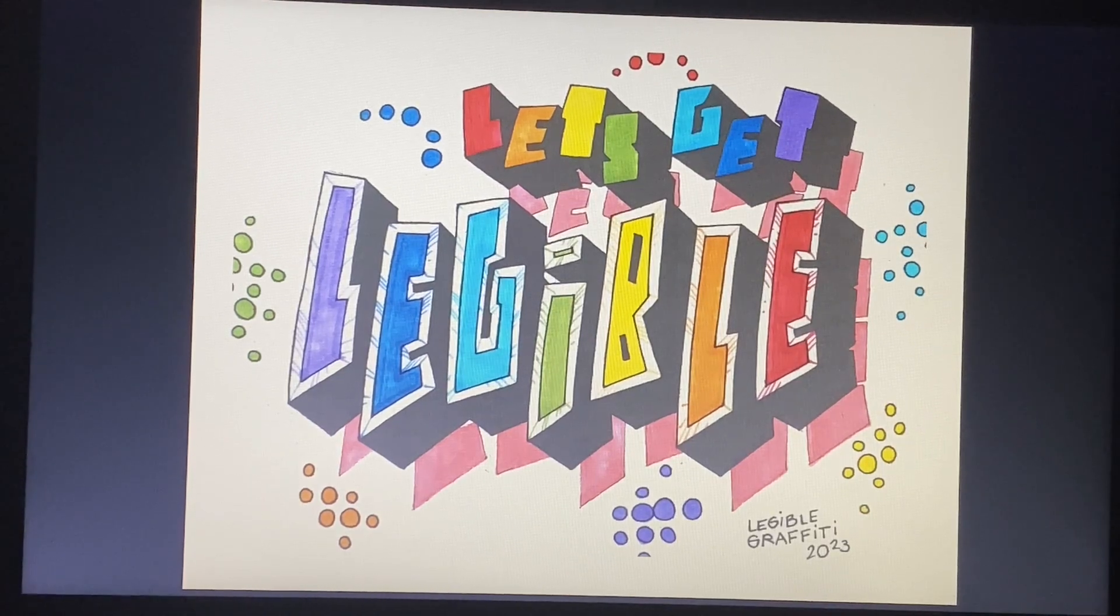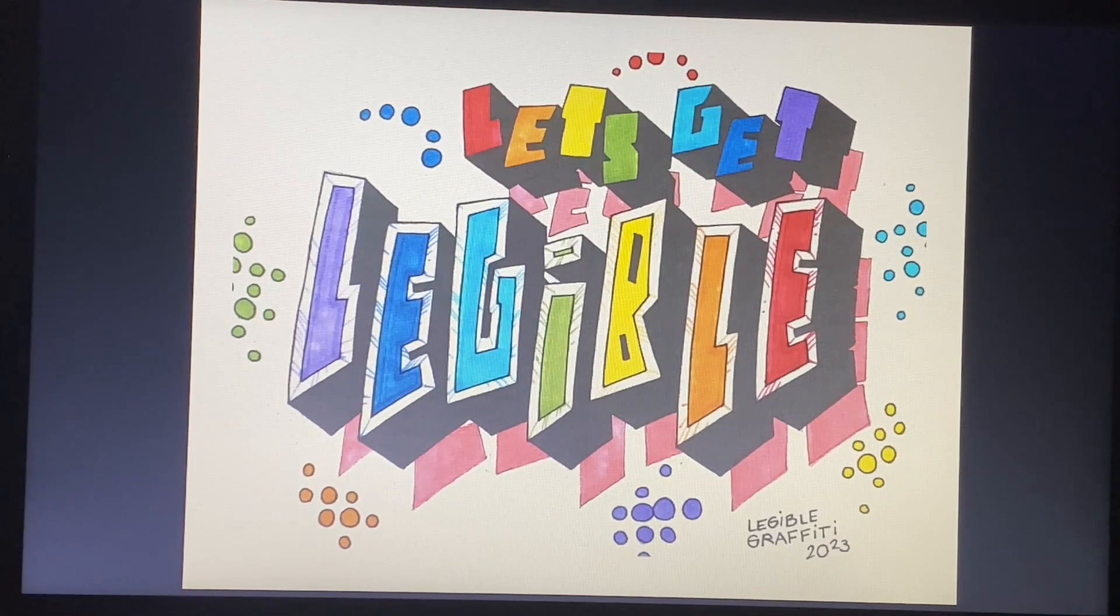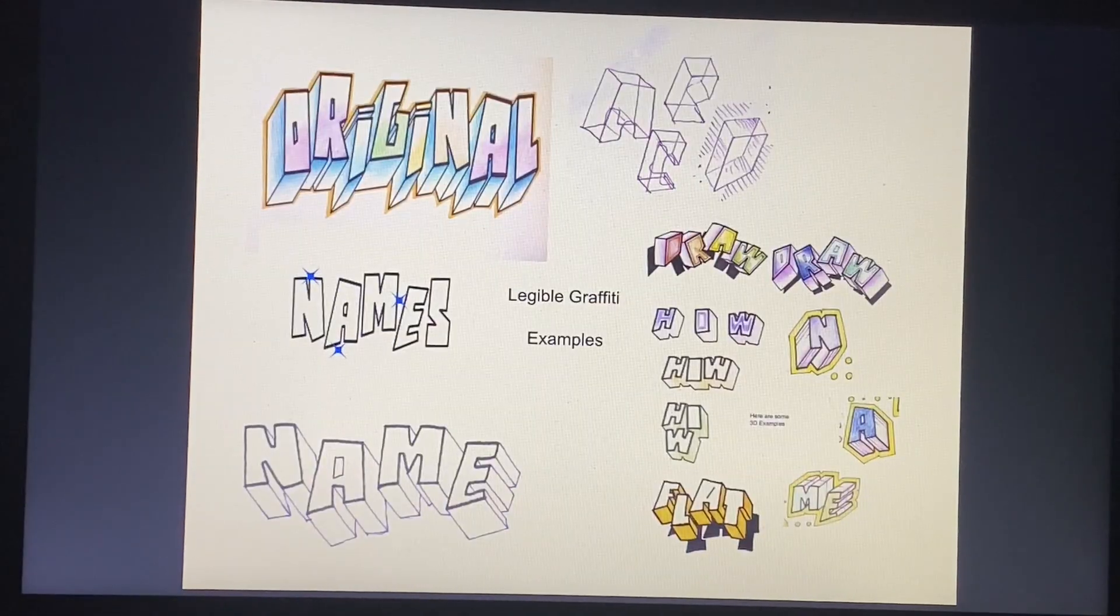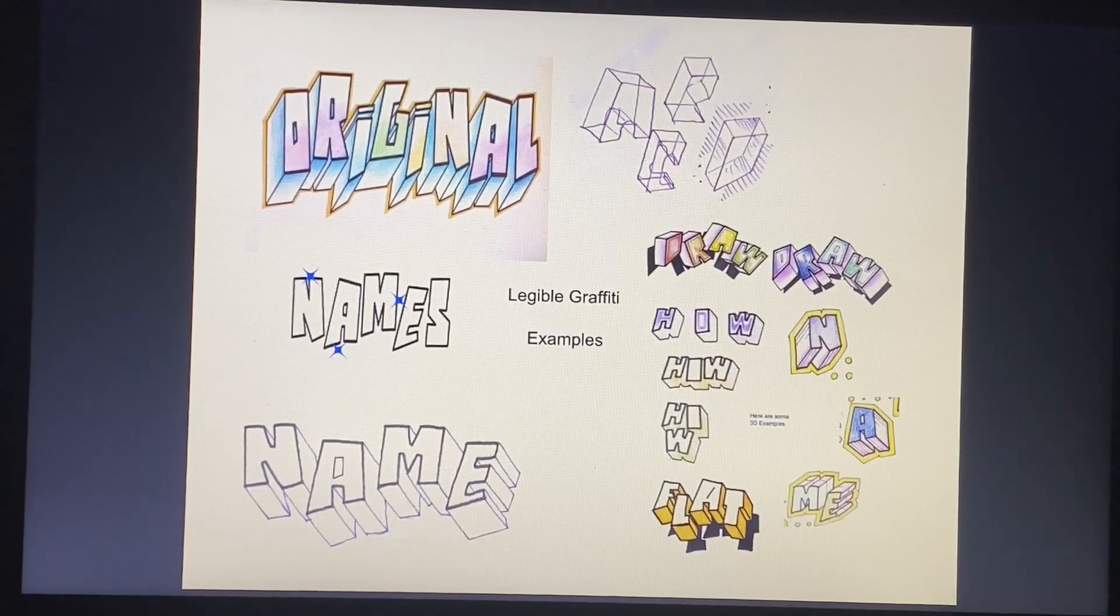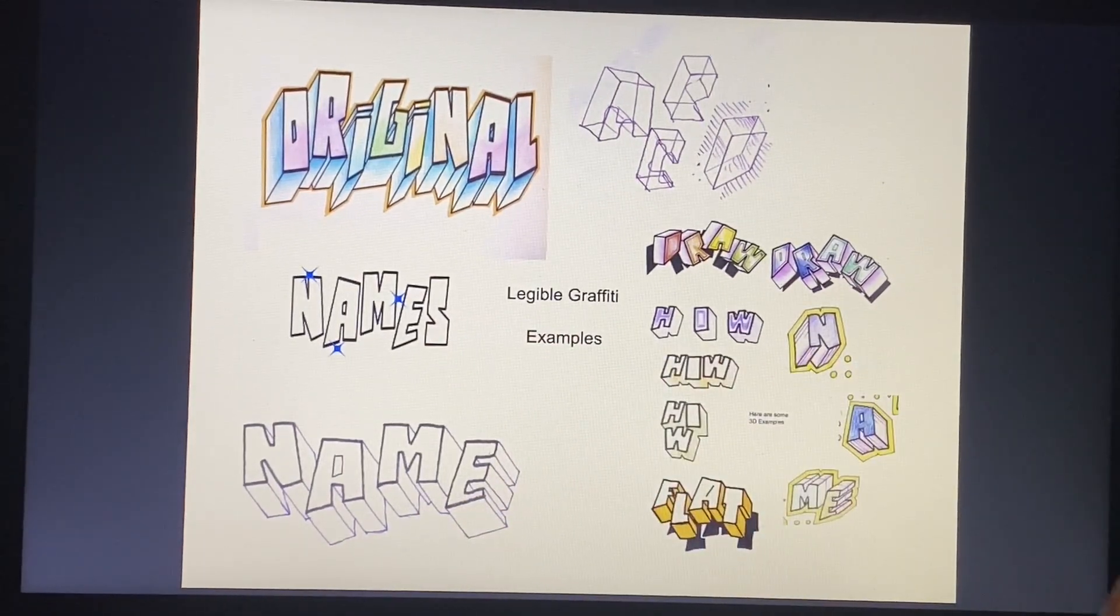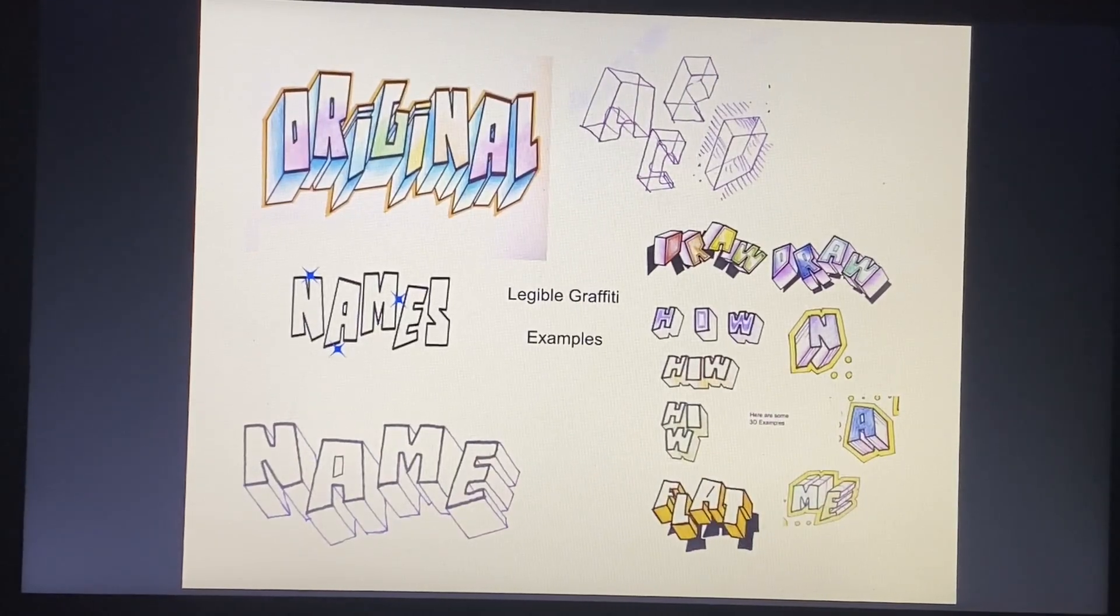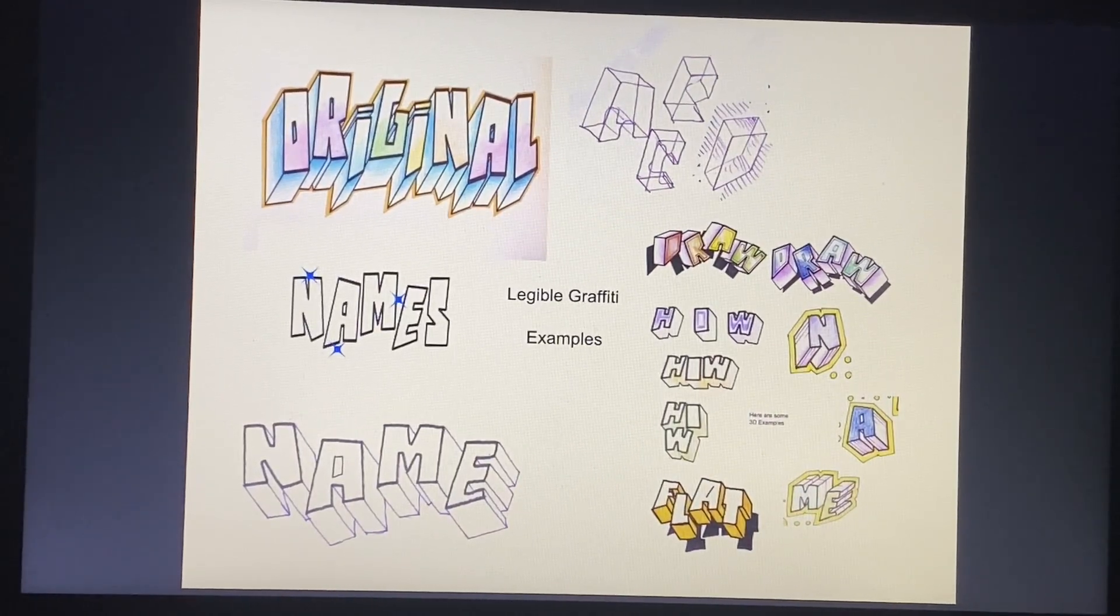Welcome to Legible Graffiti. Today we're going to learn how to make a paper necklace in 3D. First thing you're going to need when you're making a necklace is an original flat design. You're going to take something flat like names and you're going to make it in 3D, and I'm going to show you how step by step.